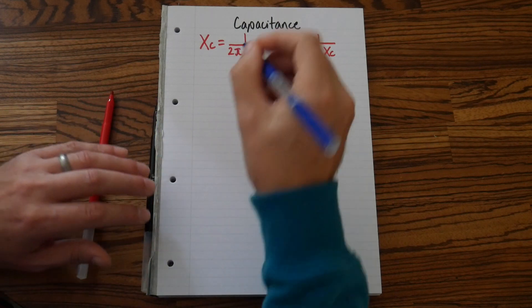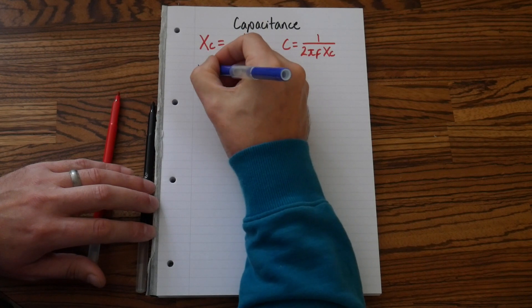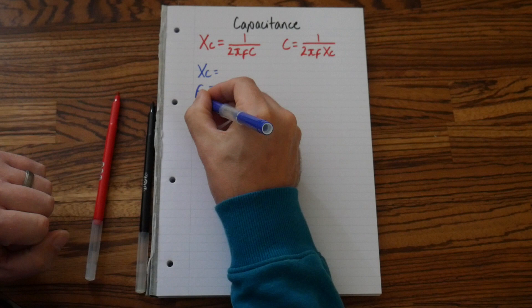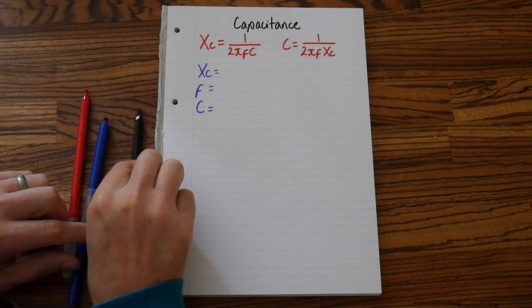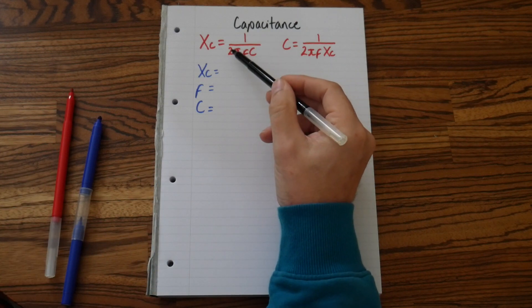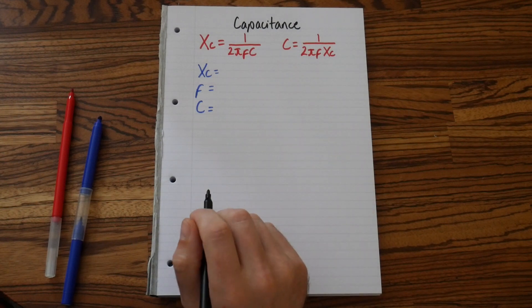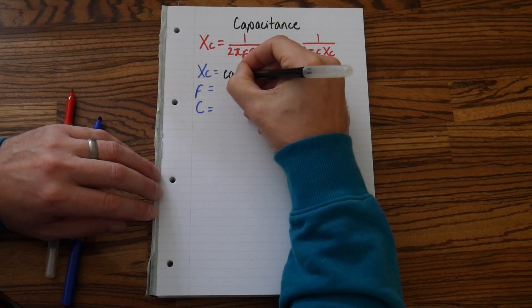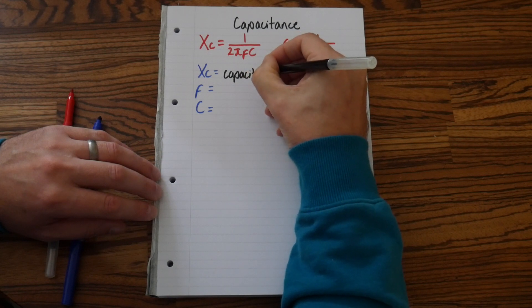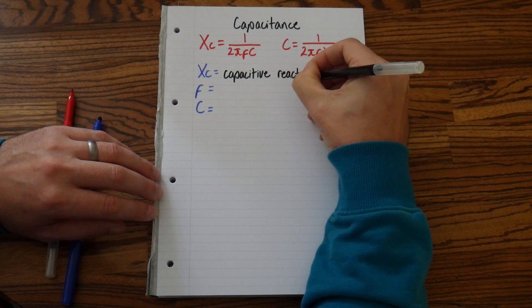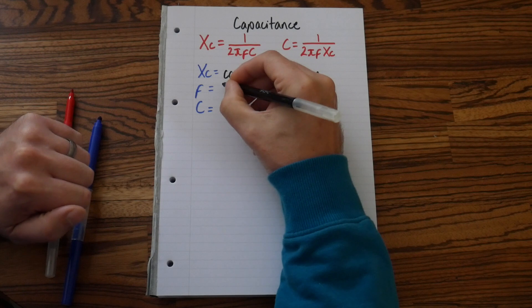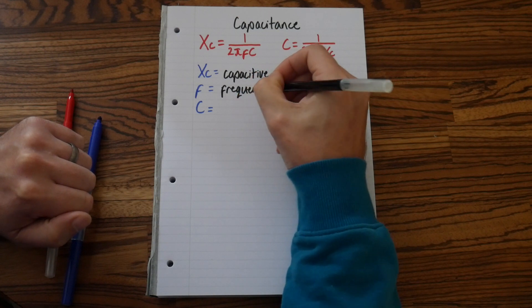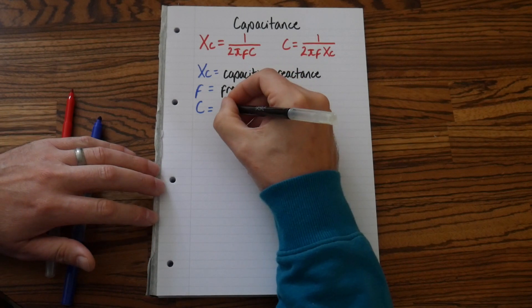So let's write down what our symbols in this formula mean. So we had Xc equals, f equals, and we have C equals. Now notice I haven't written down the number 1, the number 2, and this symbol π, the number π. We know π, that's from your calculator. So Xc is capacitive reactance. And lowercase f is frequency. And a capital C is capacitance.